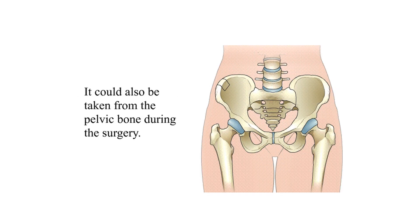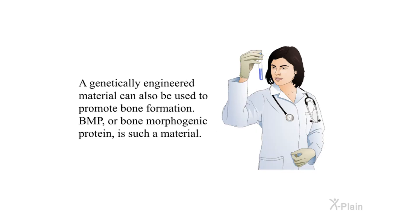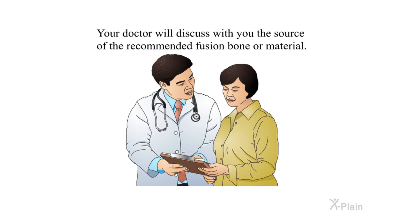The bone can come from different sources. Some of it could come from the bone removed to take the pressure off the nerves. It could also be taken from the pelvic bone during surgery. Alternatively, a piece of bone taken from cadavers is tested for known diseases prior to placing it in your back. A genetically engineered material can also be used to promote bone formation — BMP, or bone morphogenic protein, is such a material. Your doctor will discuss with you the source of the recommended fusion bone or material.